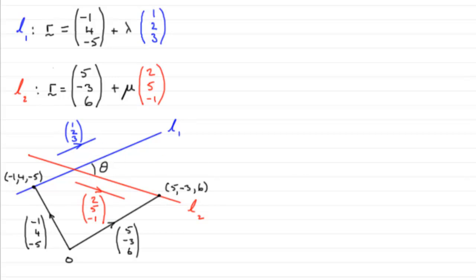So when it comes to working out angle theta, what we can do is this. We can take the blue vector and imagine it translated to there. We can also take the red vector and translate it over to there. So you can see that the angle theta is the angle between the two direction vectors.